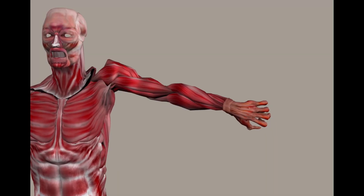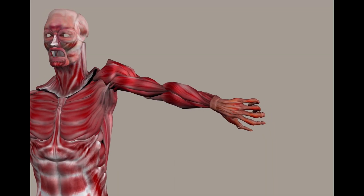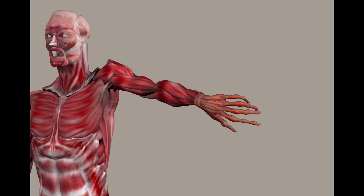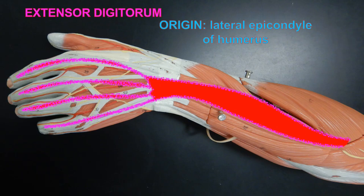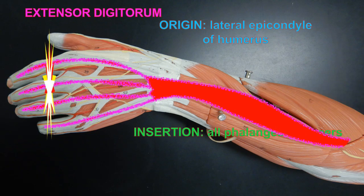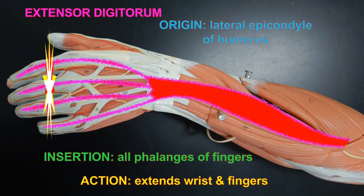Between the extensor carpi radialis and ulnaris is the extensor digitorum muscle. It originates on the lateral epicondyle of the humerus, inserts onto all of the phalanges of the fingers, and extends the wrist and fingers.